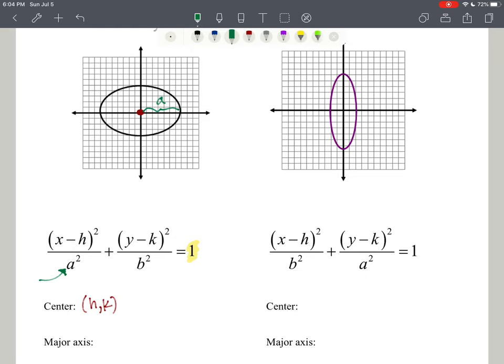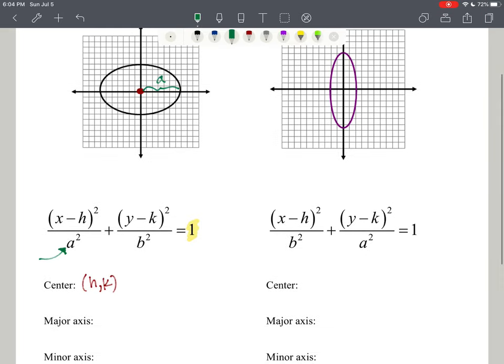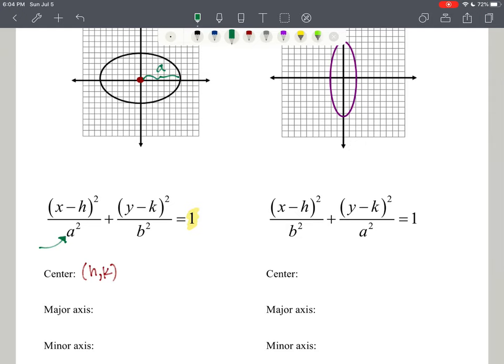So it's going to have a major radius of a. The major axis in this case is along the x-axis, which is equal to a.